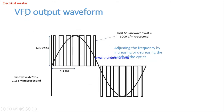The VFD output waveform is a sine wave. For example, at 50 Hz there are 50 cycles per second. Each cycle can have different widths — some cycles are larger and some smaller, which is the PWM input. To increase the frequency, we increase the width of the cycle; to decrease it, we reduce the width. Using this PWM technique we can easily control the output frequency of the VFD and therefore the motor speed.